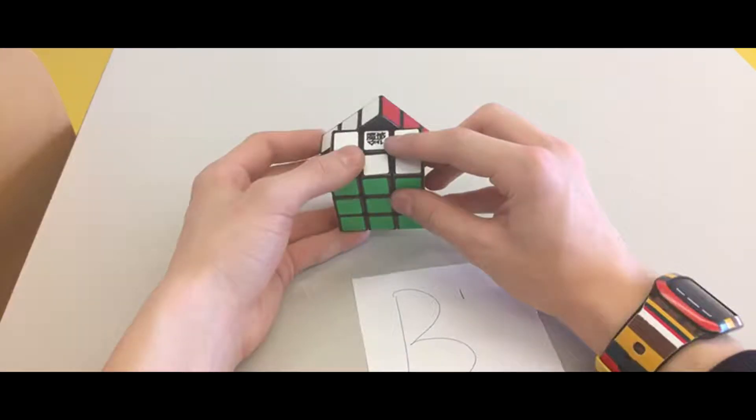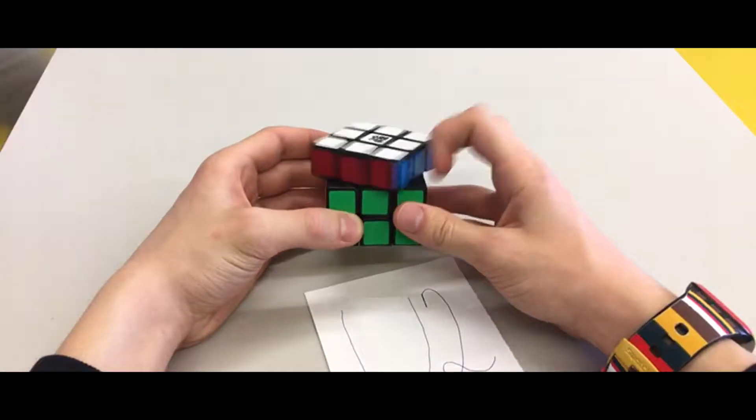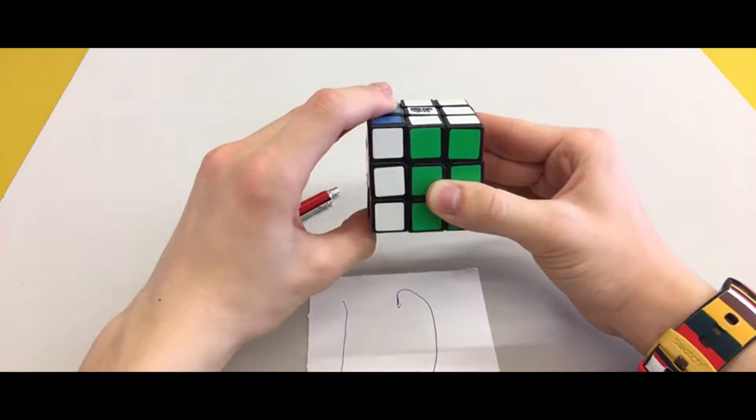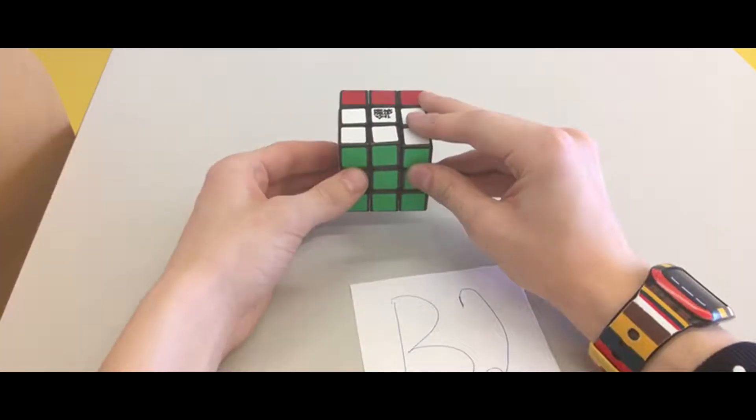There are 6 sides, and each letter represents one side. R stands for right, U stands for upper, F stands for front, L stands for left, D stands for down, and B stands for back.